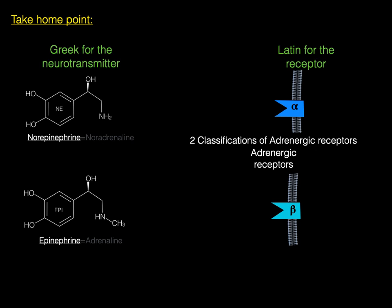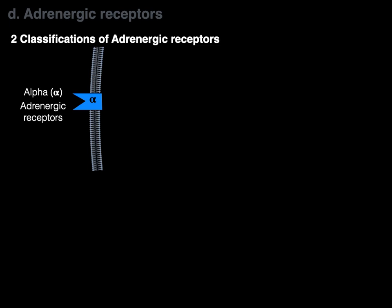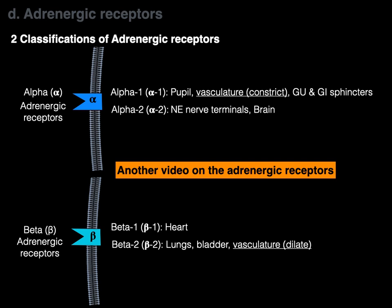There are two classifications of adrenergic receptors: alpha adrenergic receptors — specifically alpha-1 and alpha-2 — and beta adrenergic receptors — beta-1 and beta-2. Another video on adrenergic receptors covers all four of these in more detail.